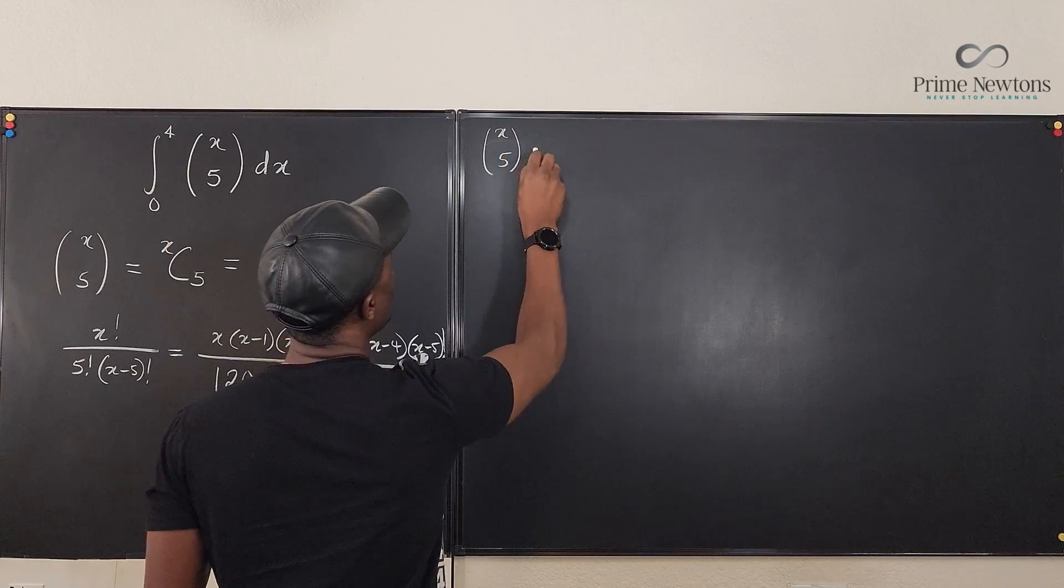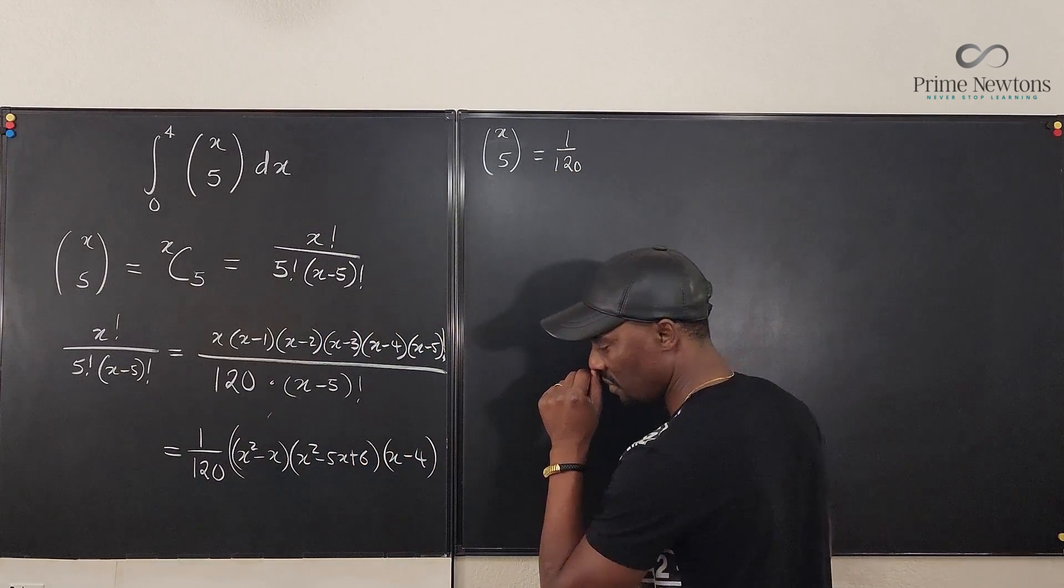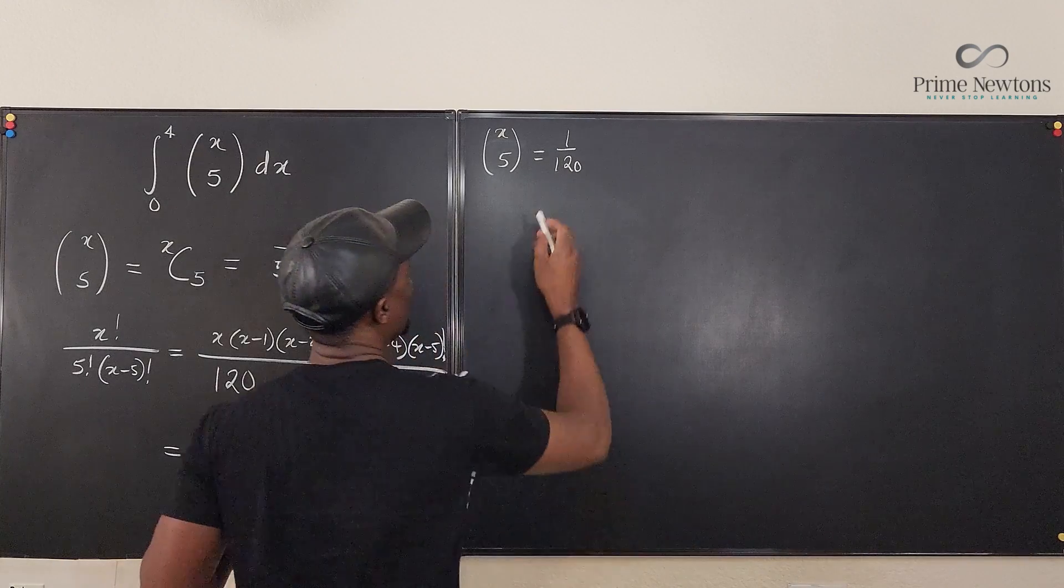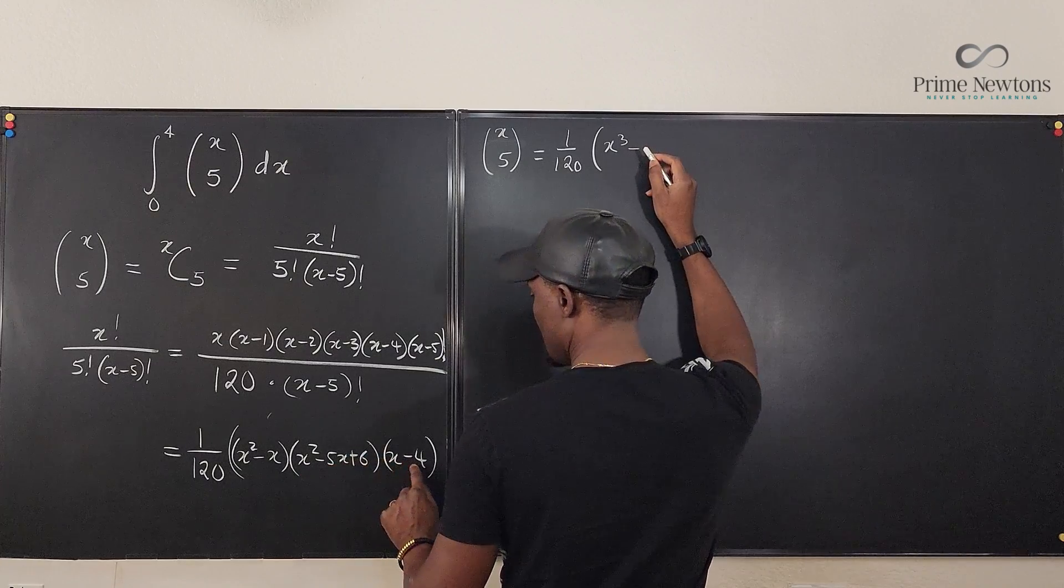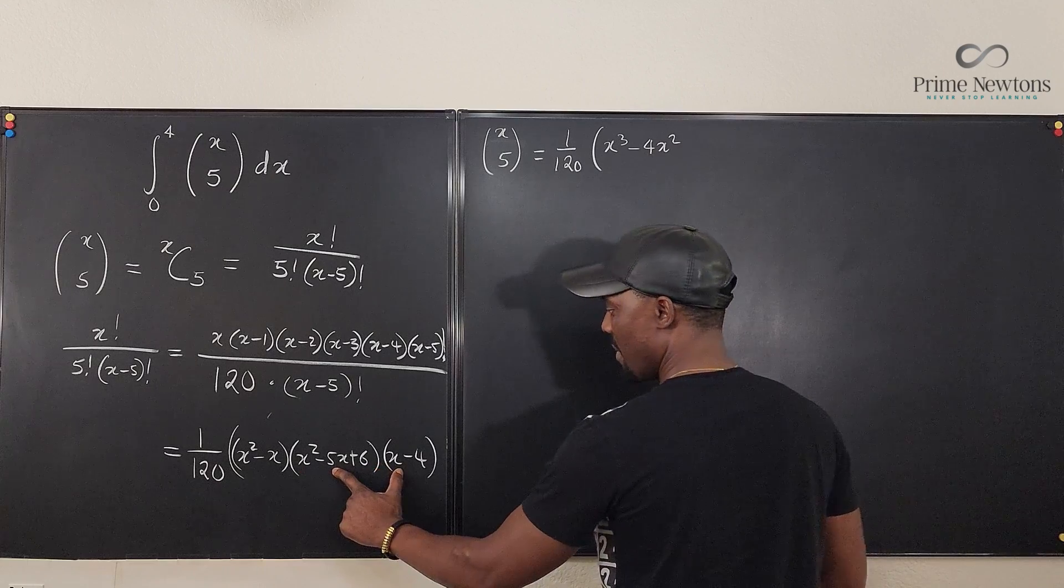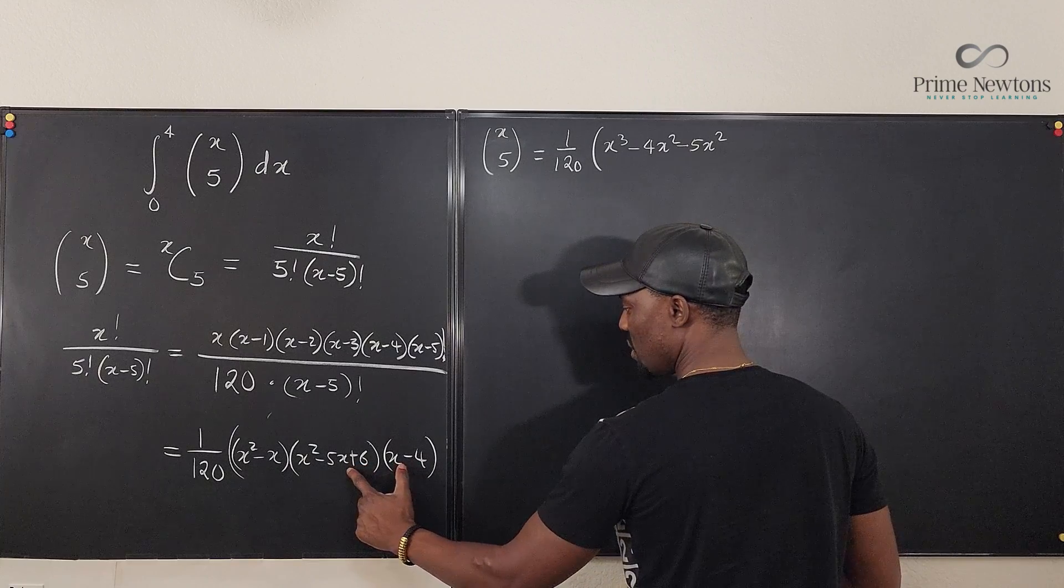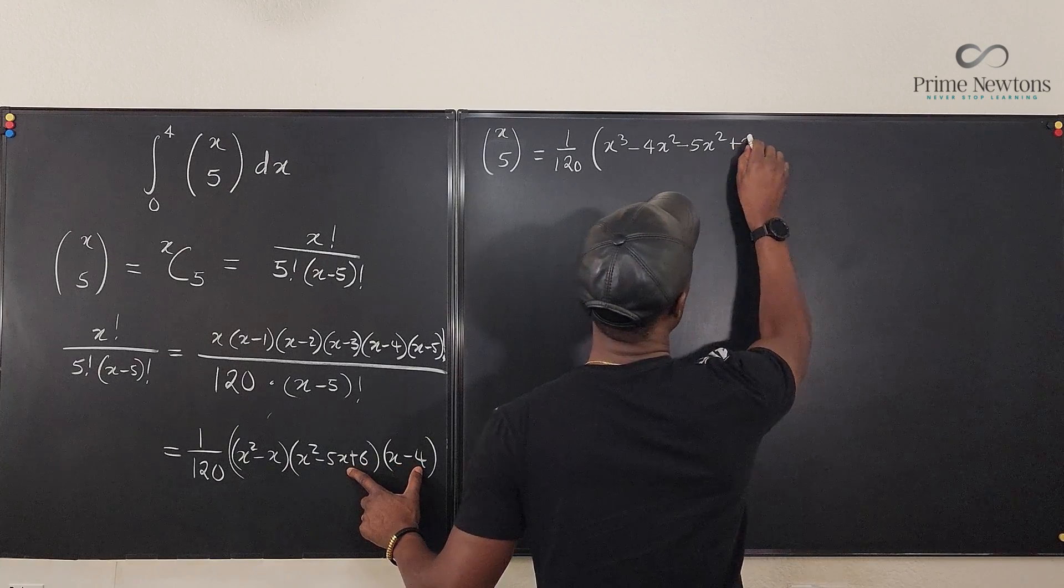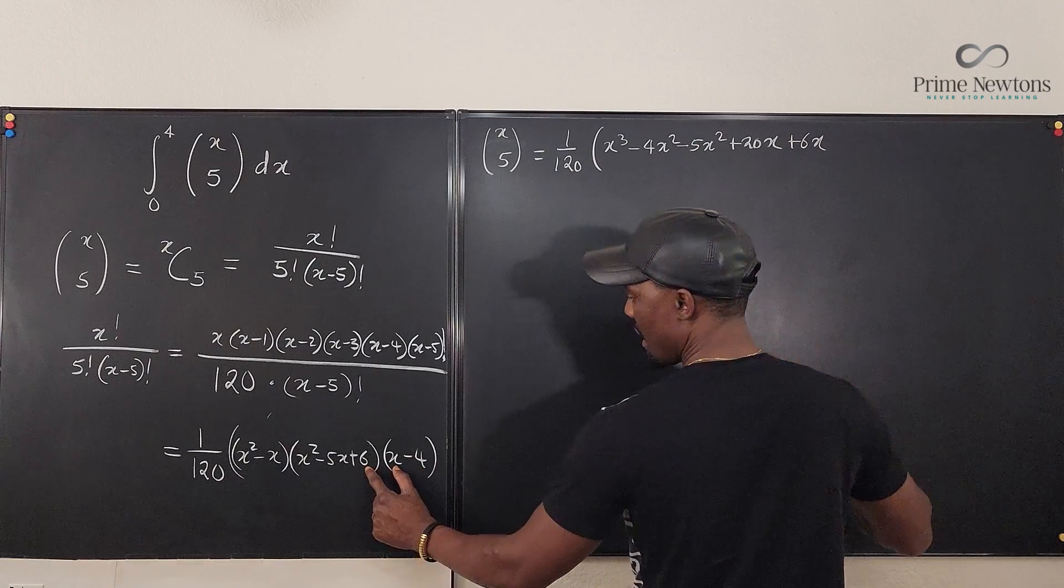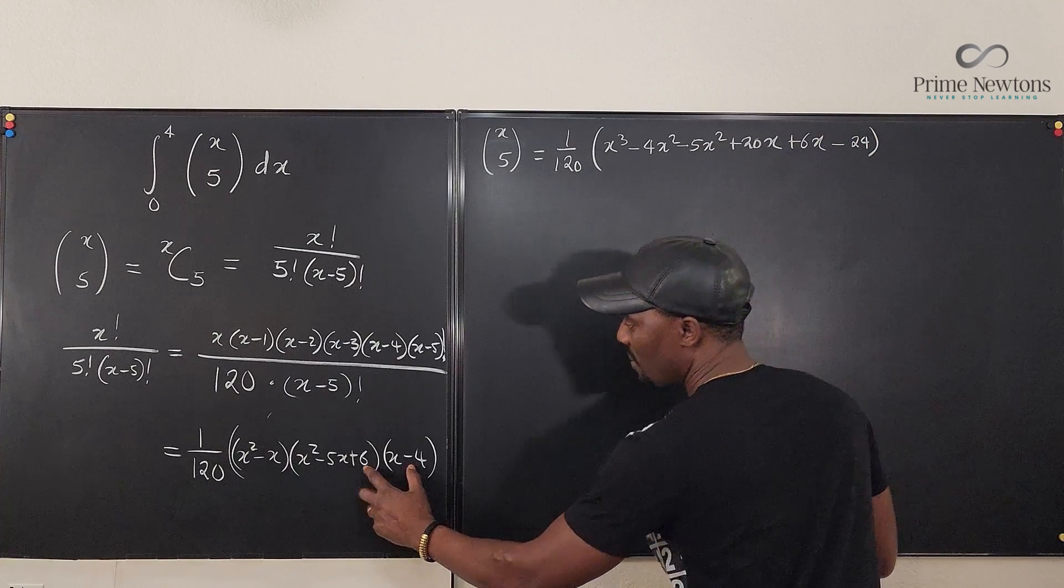This is equal to combination 5 is 1 over 120 multiplied by, let's see which one to distribute first. Let's do this. Let's distribute these ones. So this is going to be x cubed. Okay, let's do this quickly. So this is minus, this is going to be 4x squared. And I have minus 5x squared. And I have, this is going to be plus 20x. And I have plus 6x. And I have minus 24. Okay, that's what I have from this multiplication.